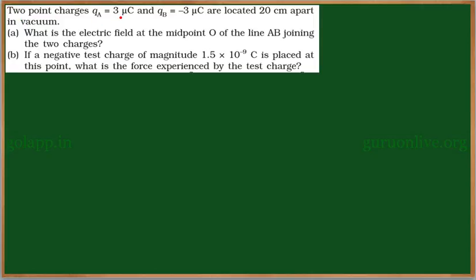Two point charges QA equal to 3 microcoulomb and QB equal to minus 3 microcoulomb are located 20 centimeters apart in vacuum. What is the electric field at the midpoint O of the line AB joining the two charges? If a negative test charge of magnitude 1.5 × 10⁻⁹ coulomb is placed at this point, what is the force experienced by the test charge?